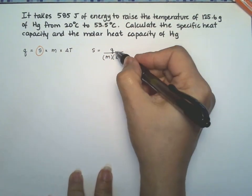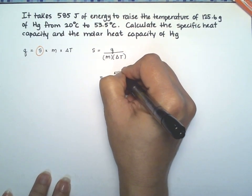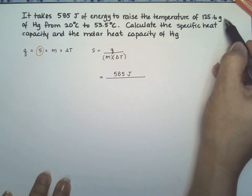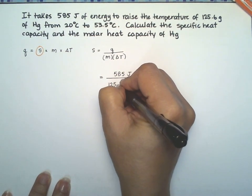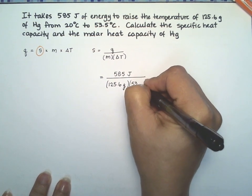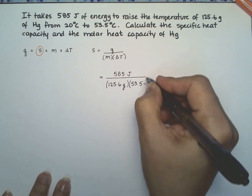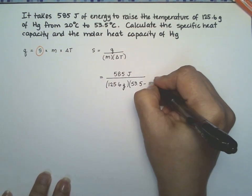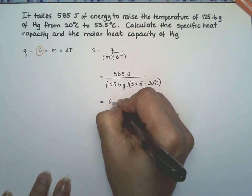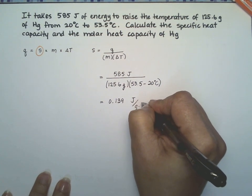So all we need to do now is put the numbers in. We have 585 joules of energy, 125.6 grams of mercury, and the temperature changes from 20 to 53.5 degrees — so remember, final temperature minus initial temperature. That gives us 0.139 joules over grams times degrees Celsius.